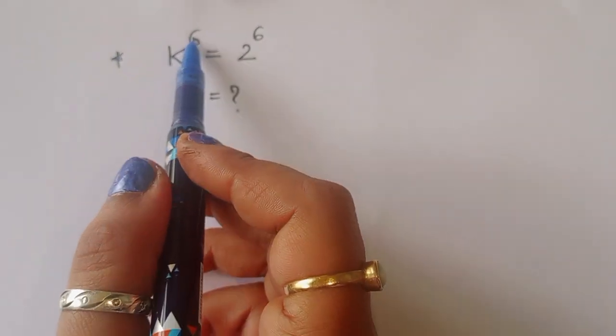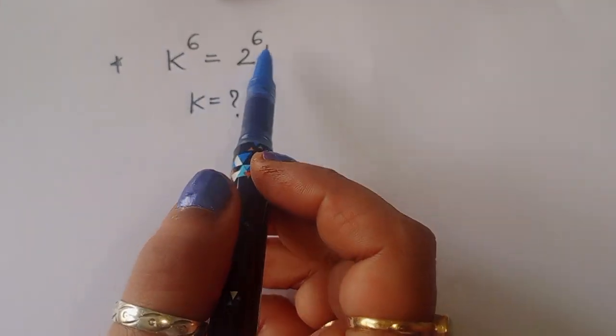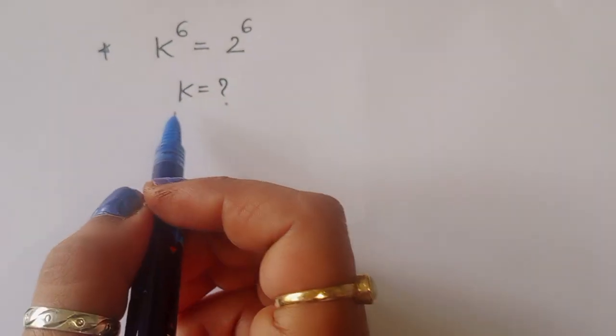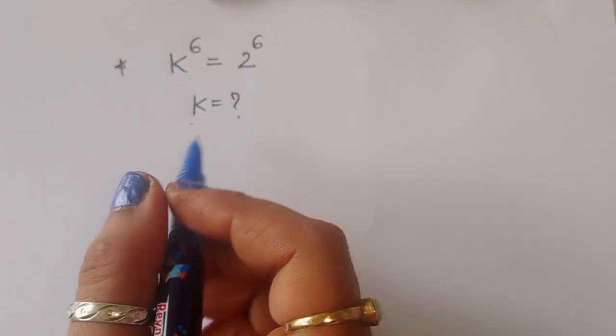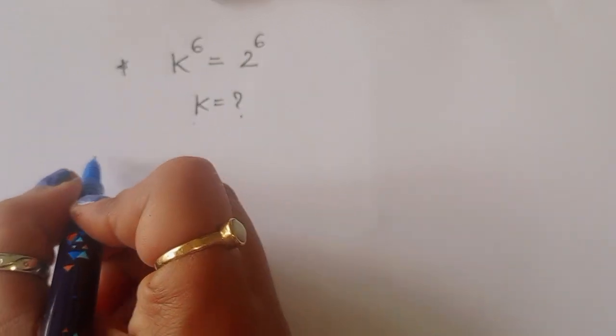The question is: given k power 6 is equal to 2 power 6, we have to find out the value of k. Let's see the solution.